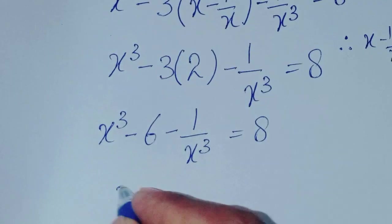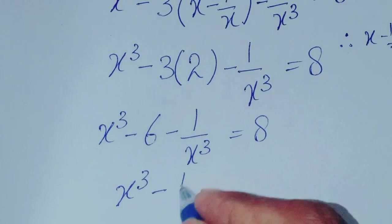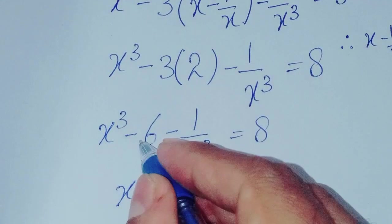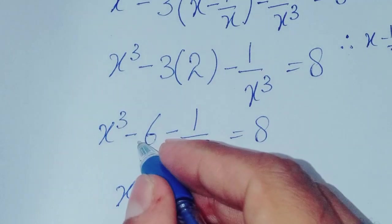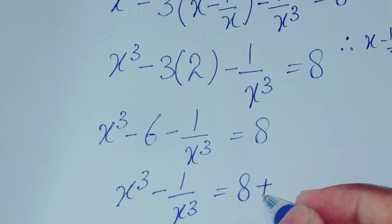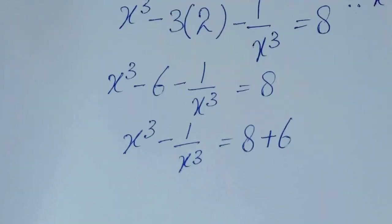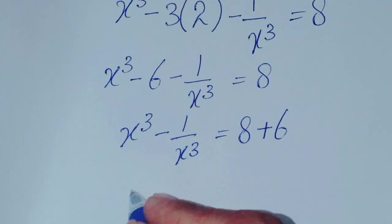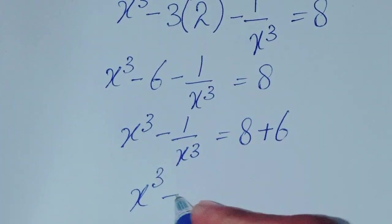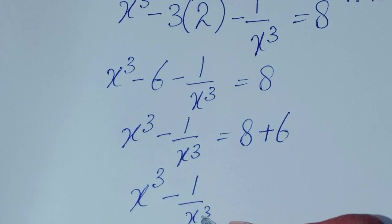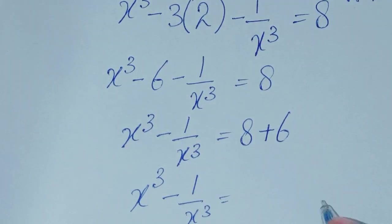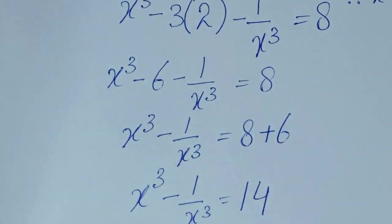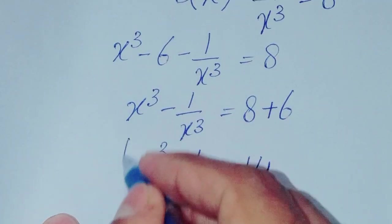Now, x cubed minus 1 over x cubed equals 8, and moving minus 6 to the other side gives plus 6. So x cubed minus 1 over x cubed is equal to 8 plus 6, which is 14. This is the required solution.